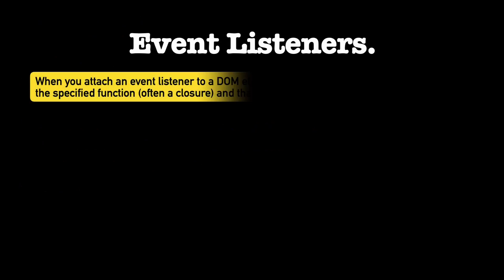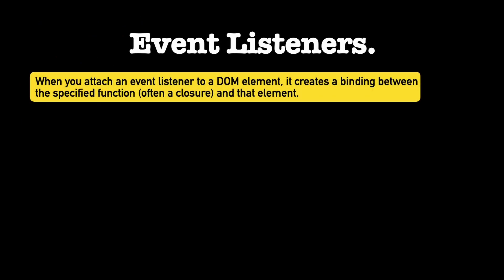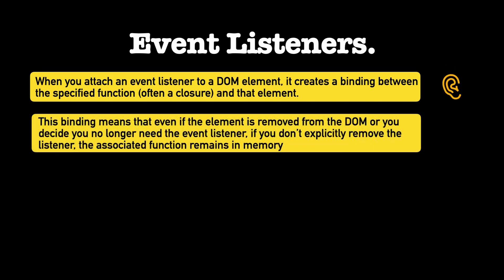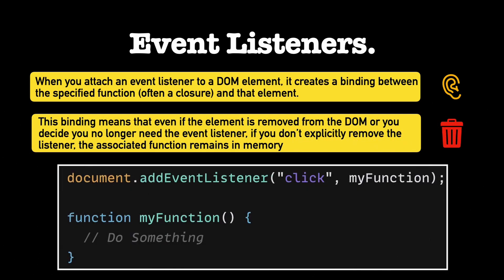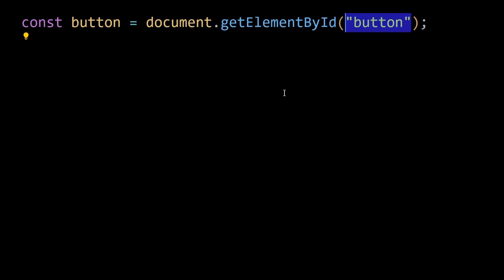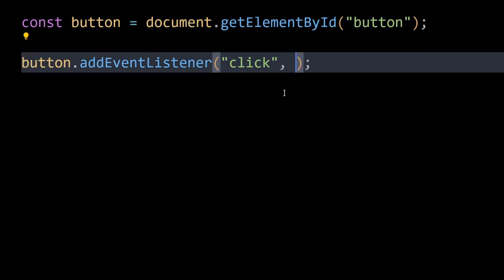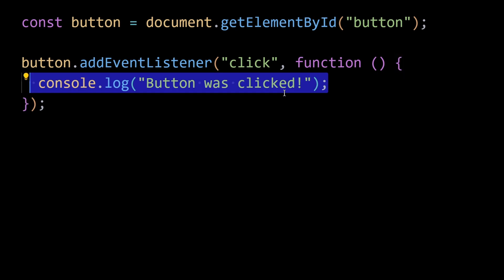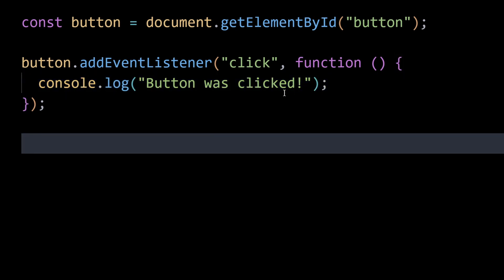Number four is event listeners. When you attach an event listener to a DOM element, it creates a binding between the specified function and that element. This binding means that even if the element is removed from the DOM, or you decide you no longer need the event listener, if you don't explicitly remove it, the associated function remains in memory. This function can retain references to other variables and elements, preventing them from being garbage collected and leading to a memory leak.